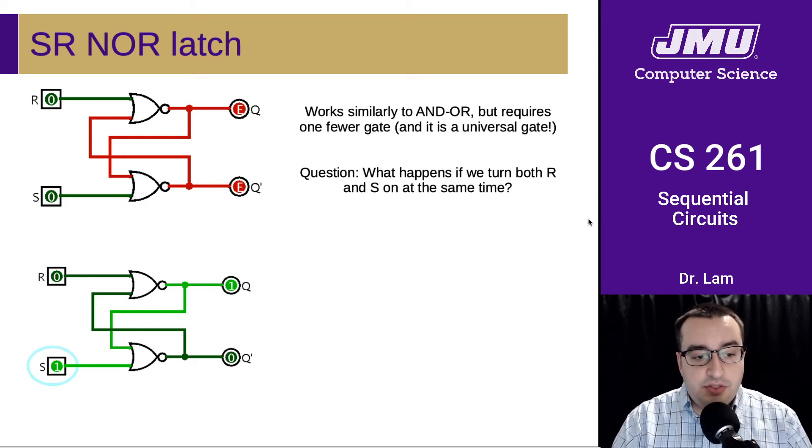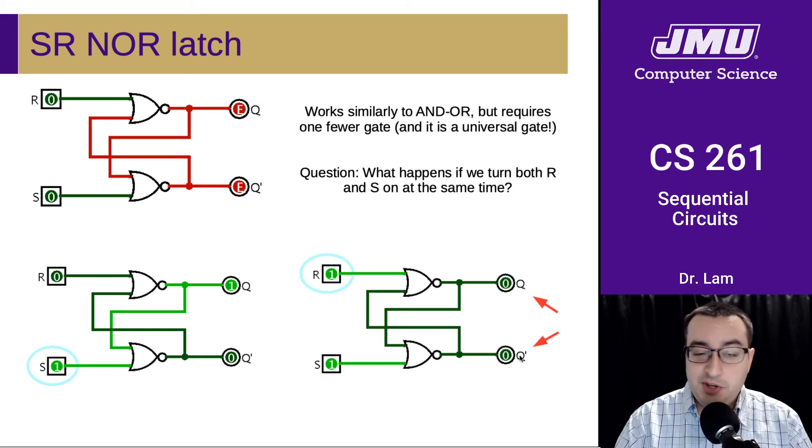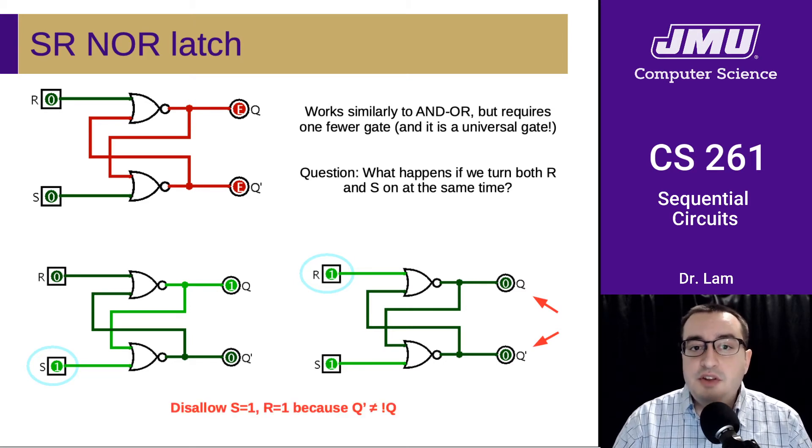If you think about this, the situation becomes weird because if we turn this on, that means this would turn off, which means we would have both Q and Q prime, or what we generally think of as NOT Q, as both being 0. We really shouldn't have Q and NOT Q both being 0. For that reason, we generally disallow having both the set and reset bit on at the same time, because then we get a self-contradictory situation.